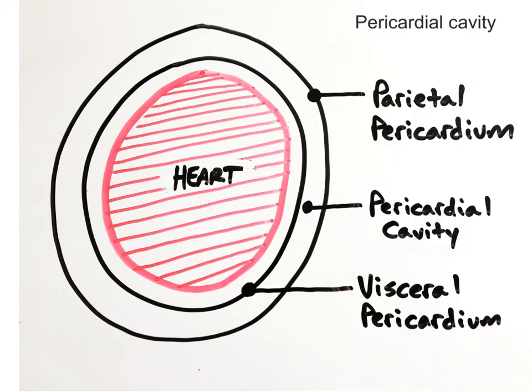The pericardial cavity contains a serous membrane called the pericardium. The parietal pericardium lines the chest wall. The visceral pericardium covers the surface of the heart. The pericardial cavity is the fluid-filled space in between the two layers that acts as a lubricant.